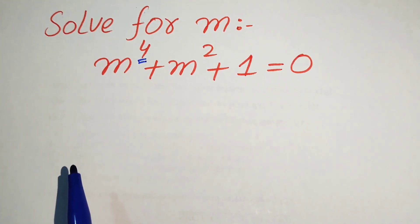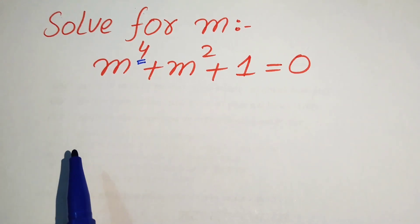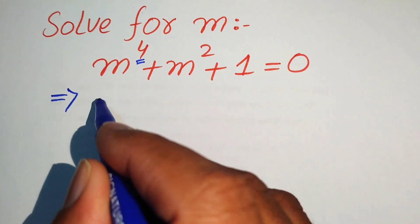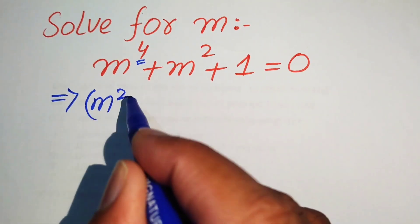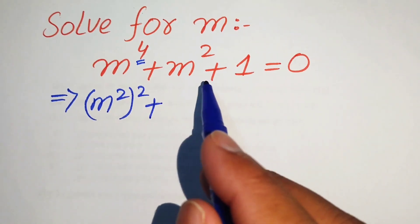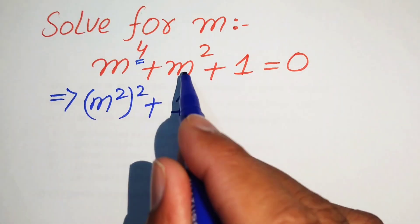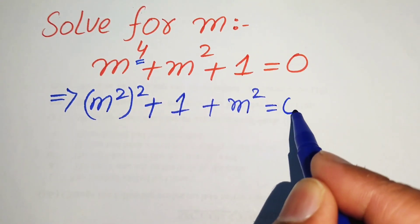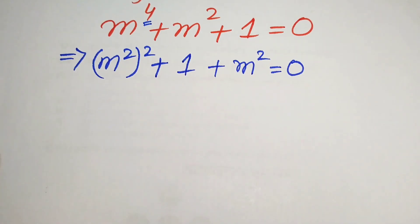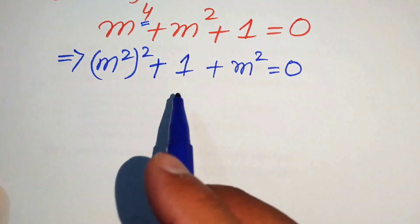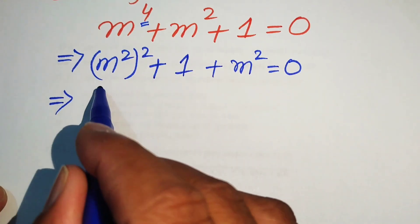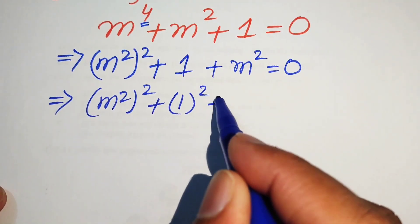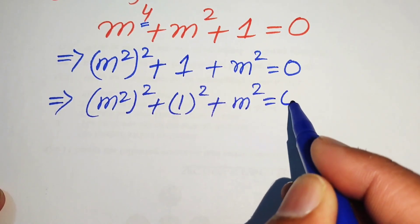The very first step is to rewrite this equation. We write m to the power of 4 as m squared whole square, then we write plus 1 and move the plus m squared to the other side, giving us m squared whole square plus 1, with plus m squared equals 0. We then write this 1 as 1 squared, so we have m squared whole square plus 1 squared plus m squared equals 0.